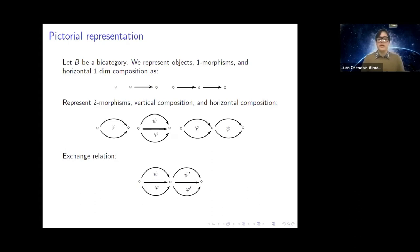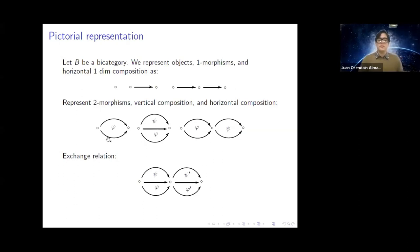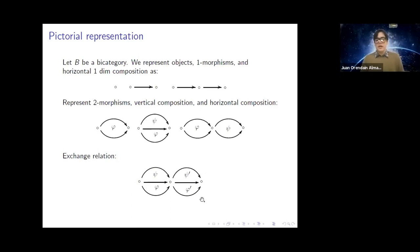In our pictorial representation: objects will be vertices, horizontal morphisms will be arrows, and we implement horizontal composition by concatenation. Two-morphisms will be globes — we read two-morphisms from bottom to top, representing a two-morphism from one arrow to another, and implement vertical and horizontal composition by usual concatenation. In this setting, the exchange relation reads: if we have any composite diagram, then any two possible interpretations of that diagram are the same.